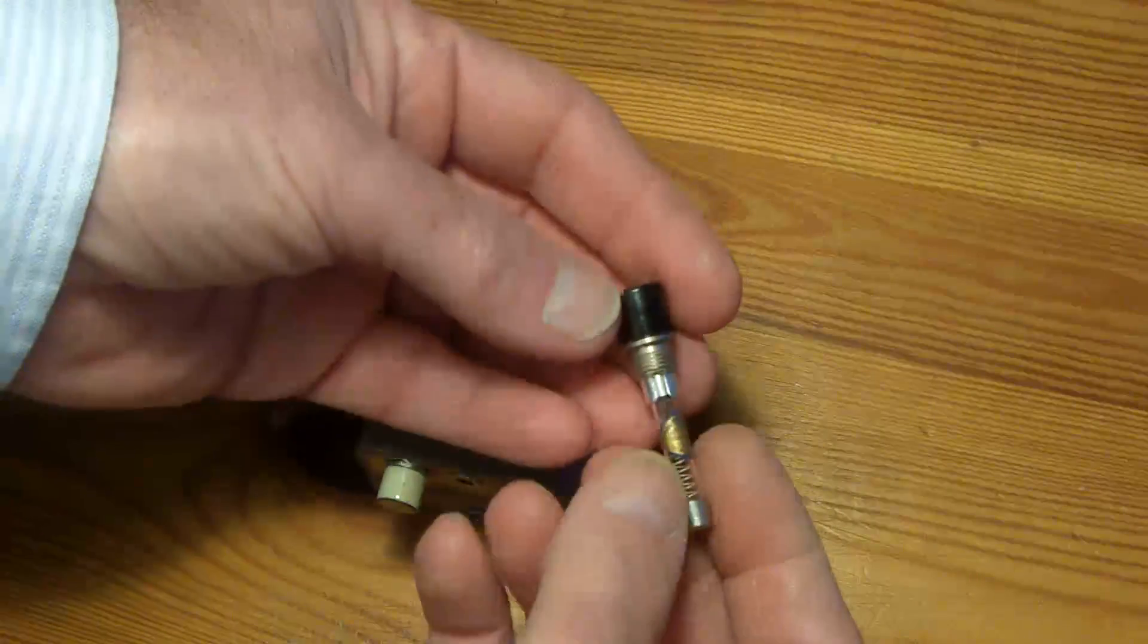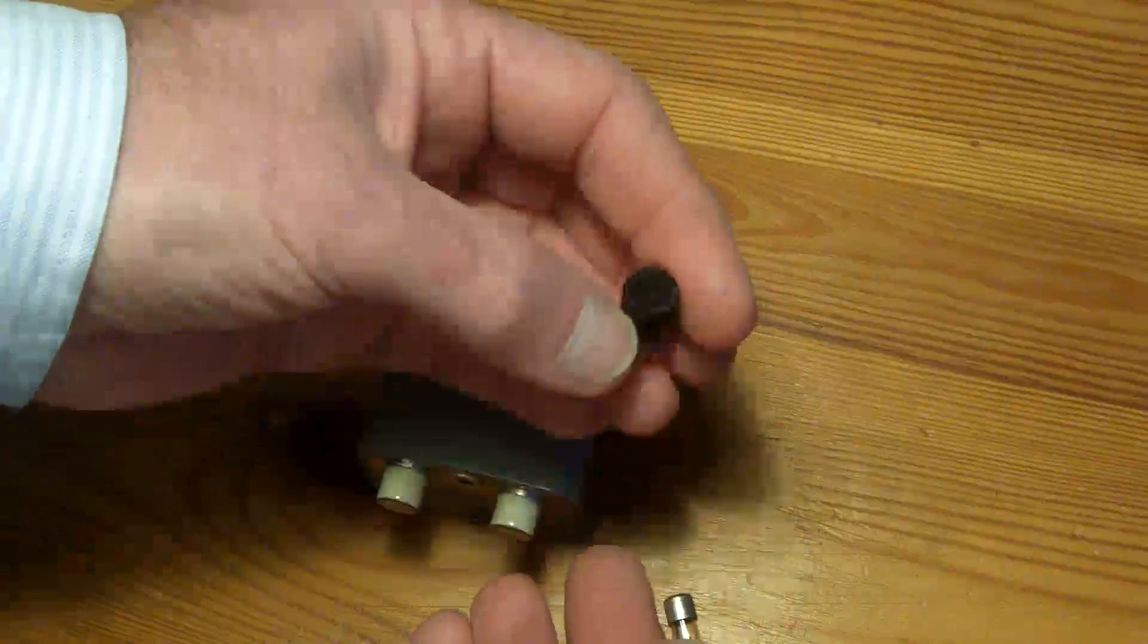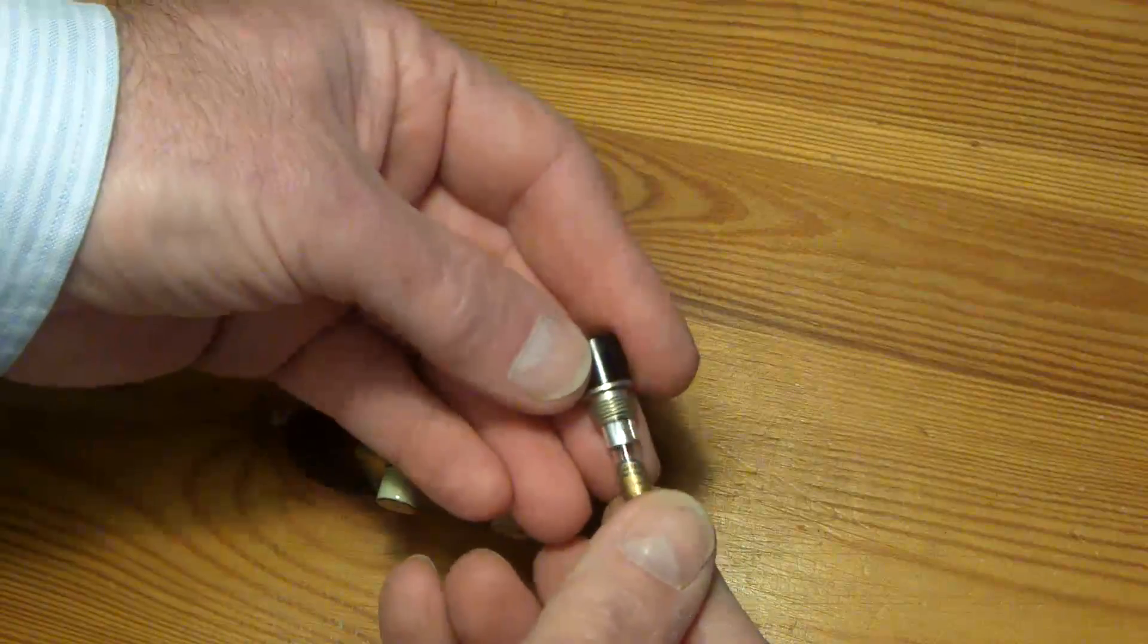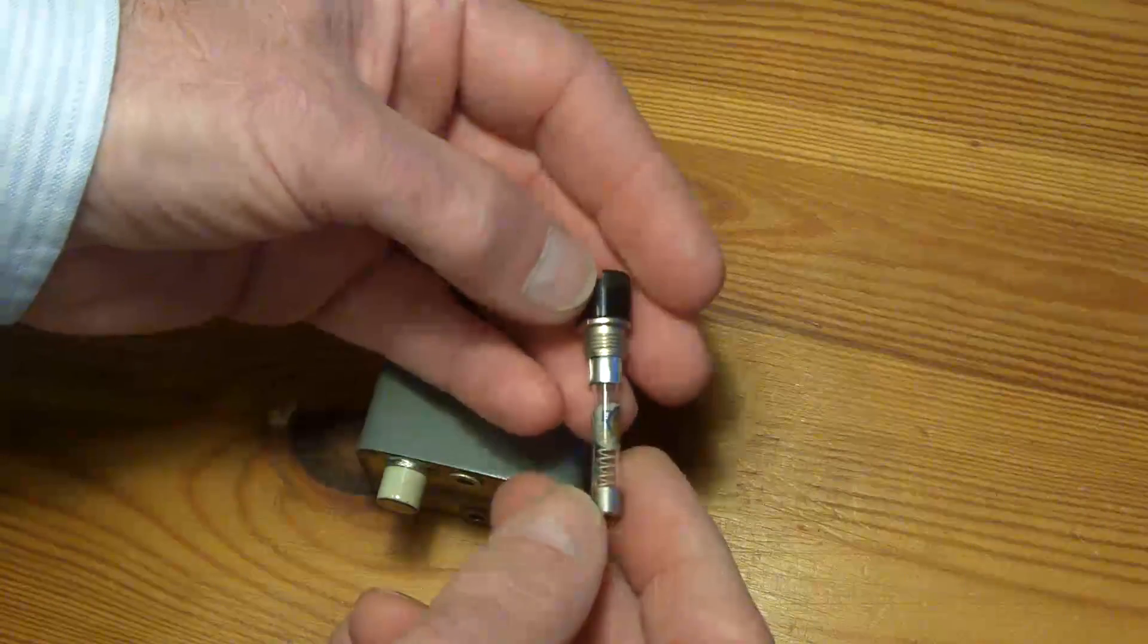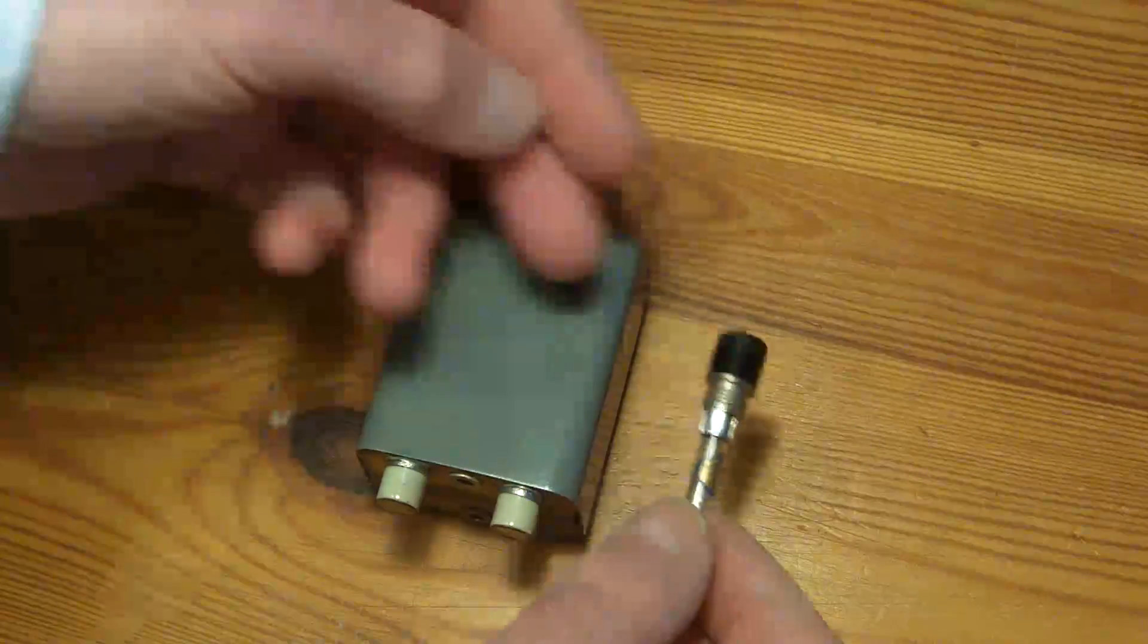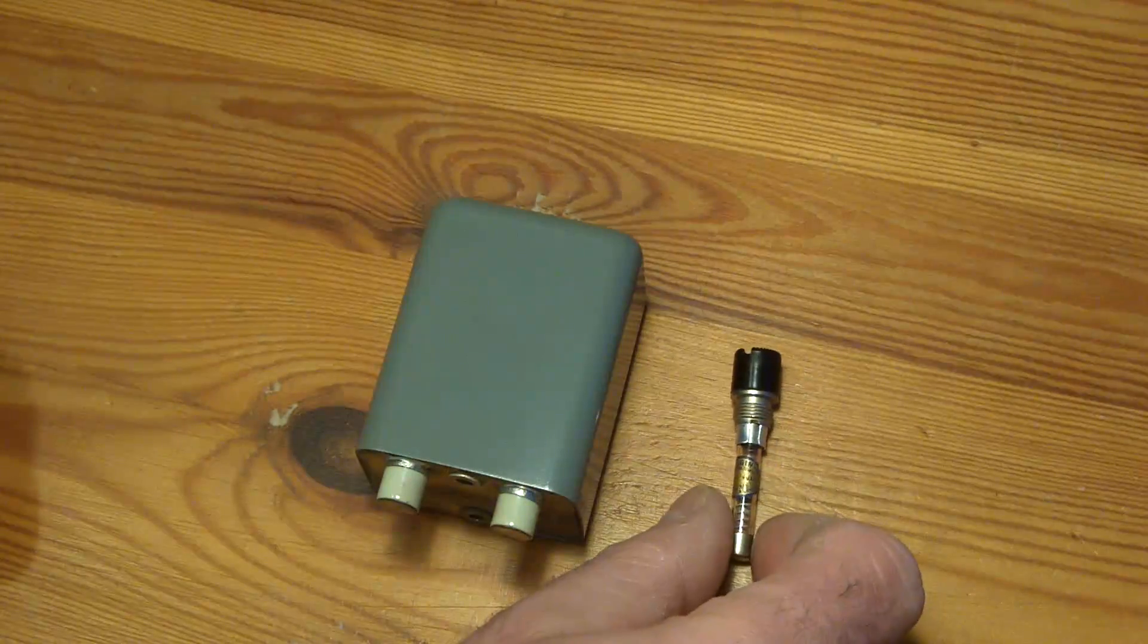And even the fuse carrier. I was missing this part of the fuse carrier and look, they've even put in a 1 amp slow blow fuse for me. Isn't that incredible for a radio of such great age.